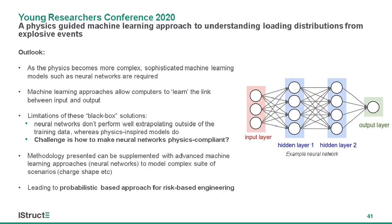So what are the next steps for us? As the physics of the scenarios we want to model become more complex due to different types or shapes of charge, we need to use more sophisticated machine learning models such as neural networks. These machine learning approaches allow computers to learn the link between the input and output, but they do have some very obvious limitations. Limitations of these black box solutions include that neural networks typically don't perform well when they extrapolate outside of the training data set, whereas physics-inspired models do. So the big challenge for us going forward is: how do we make our neural networks physics compliant?